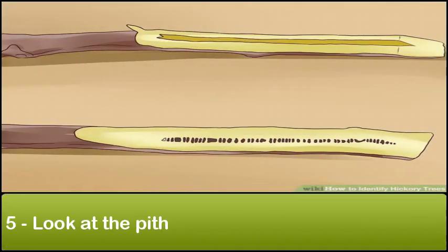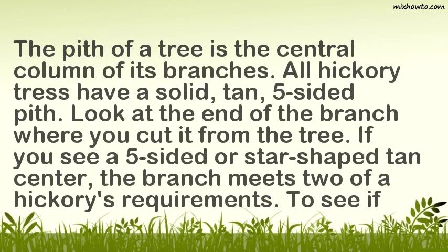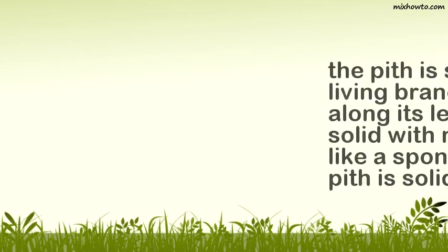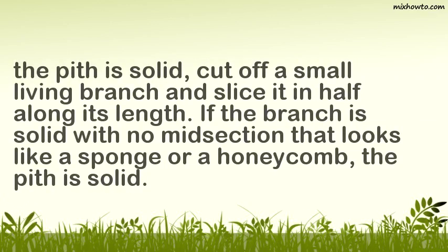Step 5: Look at the Pith. The pith of a tree is the central column of its branches. All hickory trees have a solid, tan, five-sided pith. Look at the end of the branch where you cut it from the tree. If you see a five-sided or star-shaped tan center, the branch meets two of a hickory's requirements. To see if the pith is solid, cut off a small living branch and slice it in half along its length. If the branch is solid with no midsection that looks like a sponge or a honeycomb, the pith is solid.